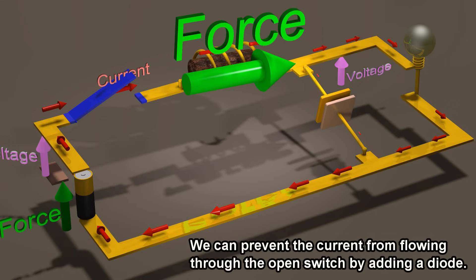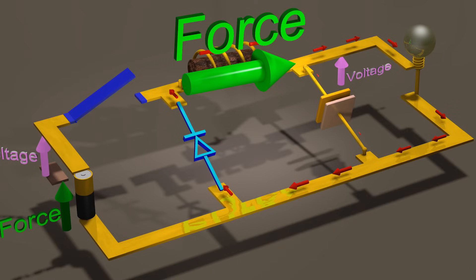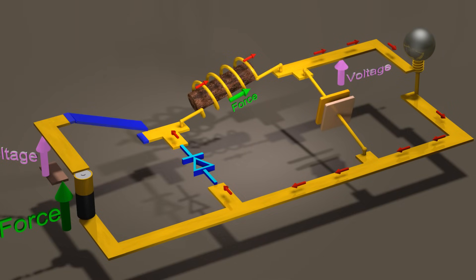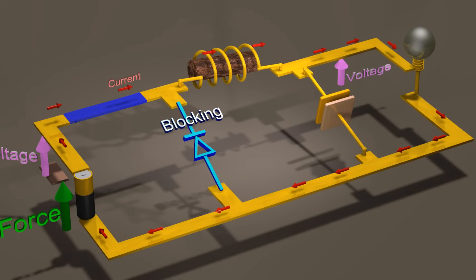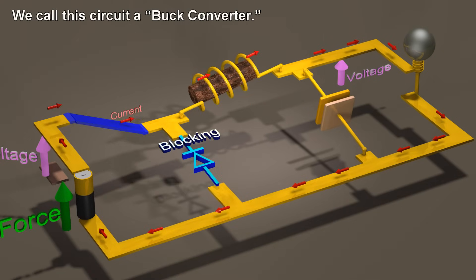We can prevent the current from flowing through the open switch by adding a diode. The diode will give the current a different path to flow through. We call this circuit a buck converter.